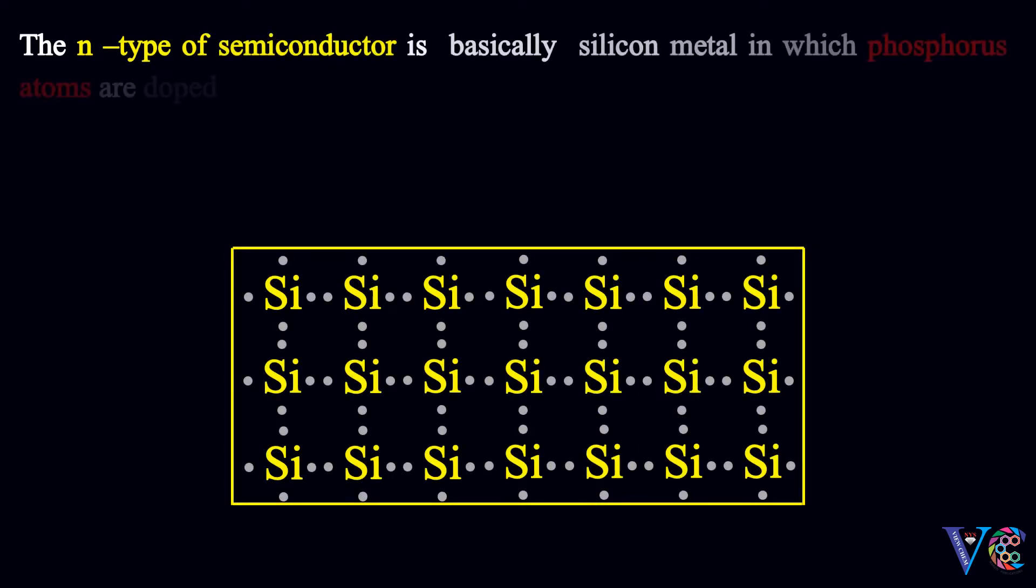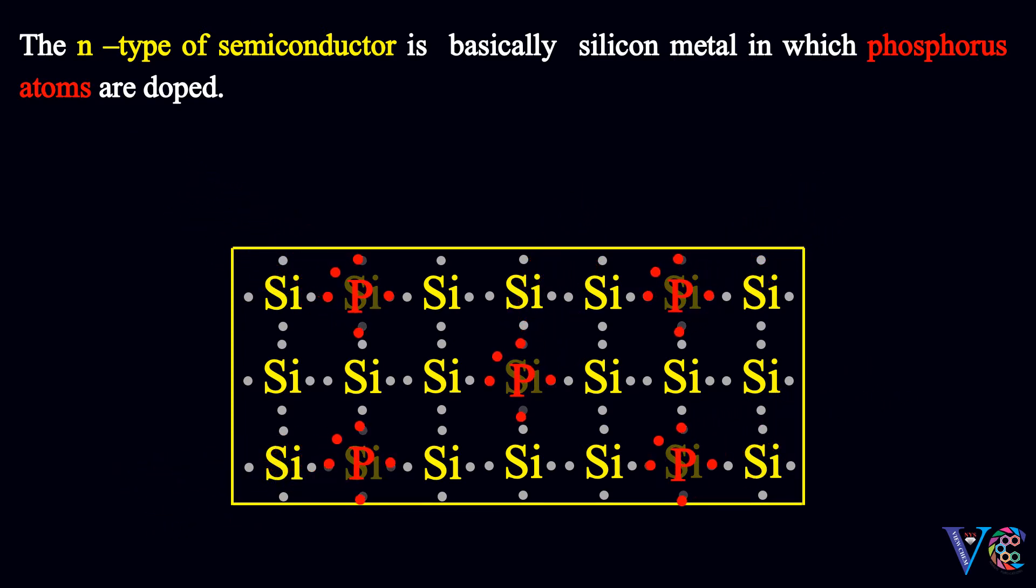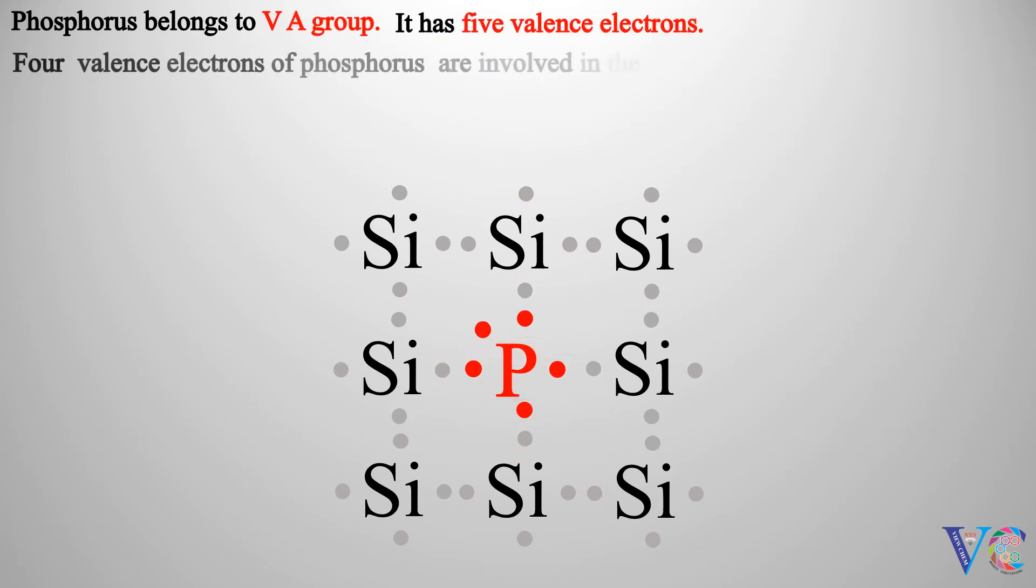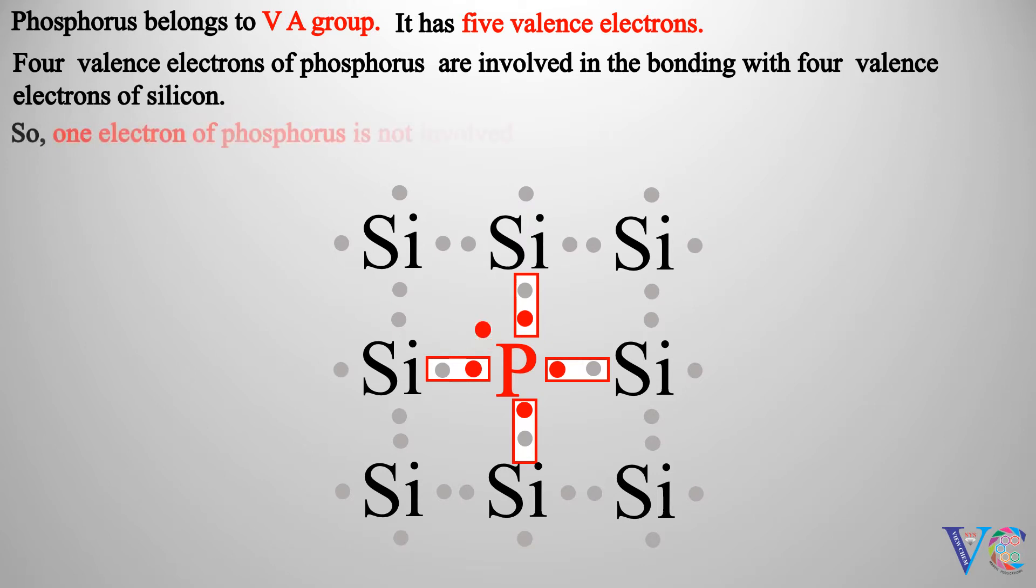The N type of semiconductor is basically silicon metal in which phosphorus atoms are doped. Phosphorus belongs to five A group. It has five valence electrons. Four valence electrons of phosphorus are involved in the bonding with four valence electrons of silicon. So, one electron of phosphorus is not involved in the bonding with silicon.